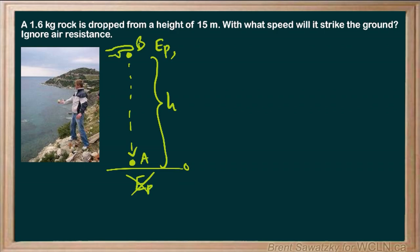Let's think about kinetic energy. At the very top, we're told we're dropping the rock, meaning we're just letting it go — not throwing it — and therefore the kinetic energy is zero because the velocity at that point is zero. In the after situation, the rock definitely has kinetic energy; it's sped up the whole way down as all that potential energy is converted into kinetic energy.